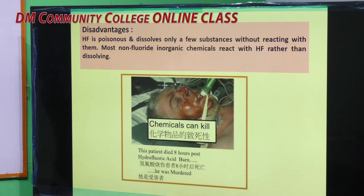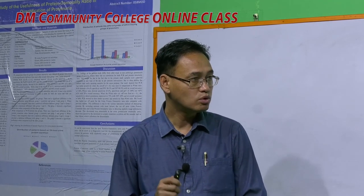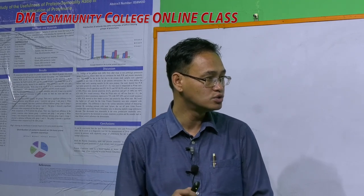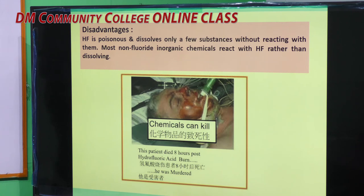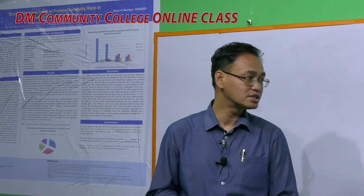Disadvantages of hydrogen fluoride as a solvent: it is poisonous and dissolves only a few substances without reacting with them. Most non-fluoride inorganic chemicals react with hydrogen fluoride rather than dissolving in it. Since hydrogen fluoride gas is highly poisonous and causes burns, these are significant disadvantages. This concludes the discussion on liquid ammonia and hydrogen fluoride as non-aqueous solvents.